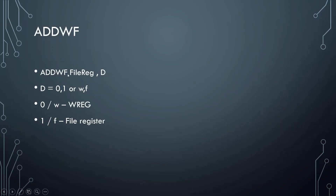ADDWF: this instruction is used to add two values — one present in the working register and one in the file register whose address is given. The 'd' field determines where the result is stored. As mentioned in previous videos, the result of the ALU can be stored in two registers: the working register or a general purpose file register. If d is 0 or 'w', the result is stored in WREG; if d is 1 or 'f', the result is stored in the file register.